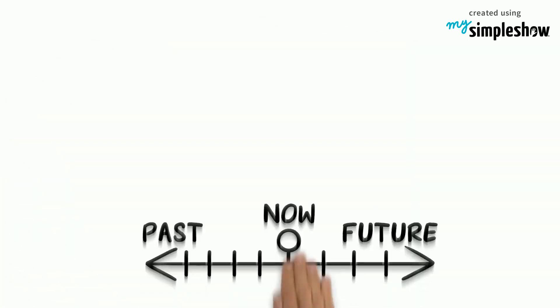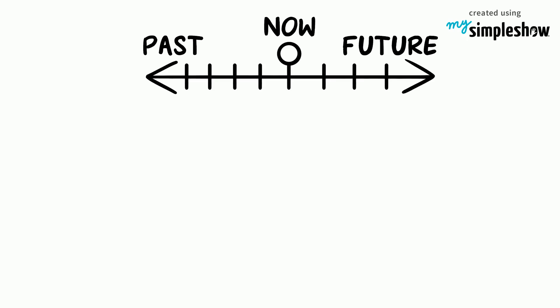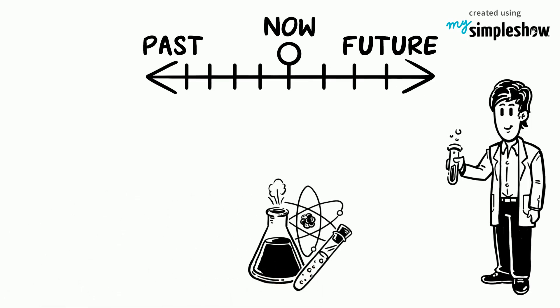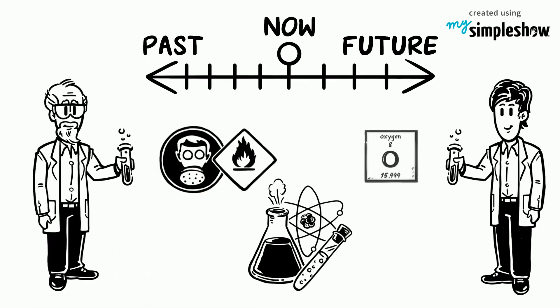However, at that time it was not identified as oxygen. French scientist Antoine Lavoisier continued the research and provided the oxidation theory, putting a name to Priestley's discovery.